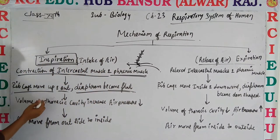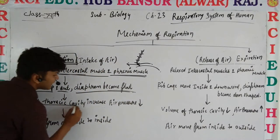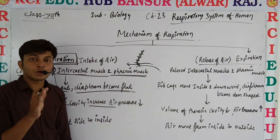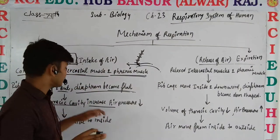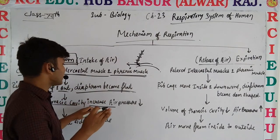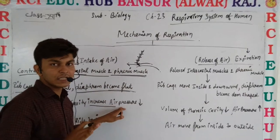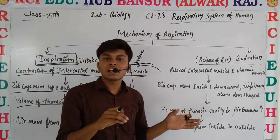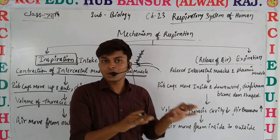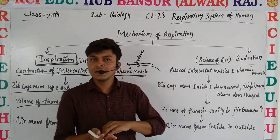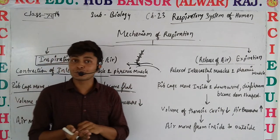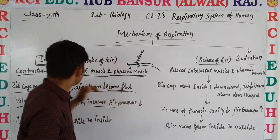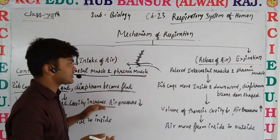Due to these changes, the thoracic cavity volume increases and the air pressure inside decreases. The surrounding air pressure is higher, so diffusion takes place and outside air moves in. That whole process takes place in inspiration.